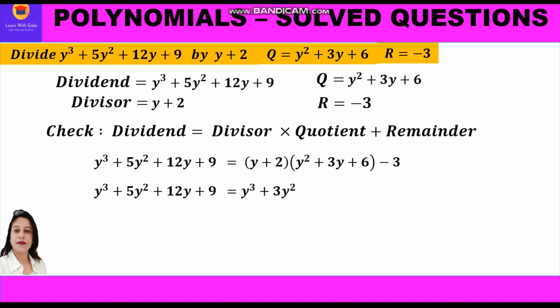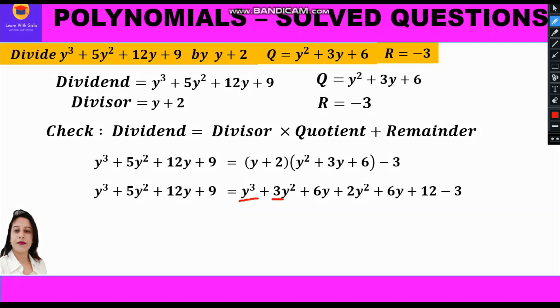We expand the right-hand side by multiplying the binomial by the trinomial. First, y multiplied by each term of the trinomial: y × y² = y³, y × 3y = 3y², y × 6 = 6y. Then 2 multiplied by each term: 2 × y² = 2y², 2 × 3y = 6y, 2 × 6 = 12. Then add −3.